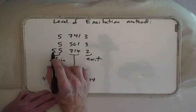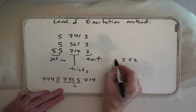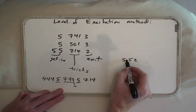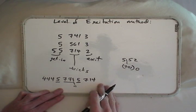You could think of the 4-ball trick 552 as, well, there's a 741 in here zero times, okay?